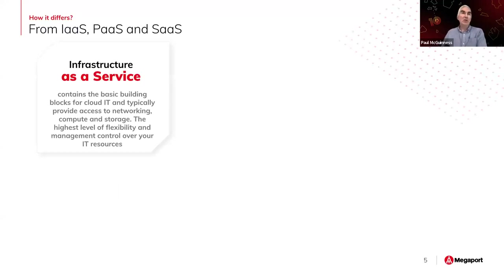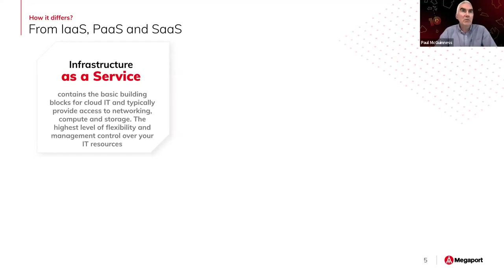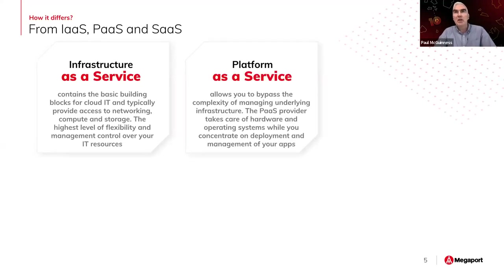Infrastructure as a Service really provides you with those basic building blocks that you need if you're going to use cloud-based IT. This could be in a hyperscaler, in public cloud, or in private cloud as well. It gives you those building blocks like networking, compute, and storage, and full flexibility of how to deploy your applications on top. There's more work involved, but it allows you to achieve everything you may wish, without having to worry about the basic building blocks.